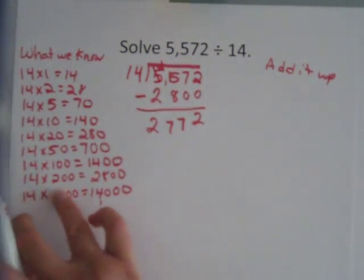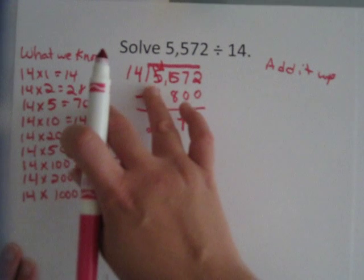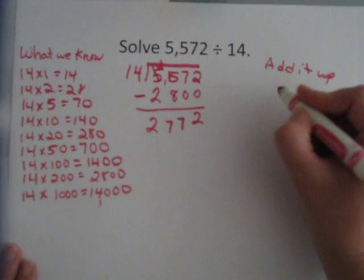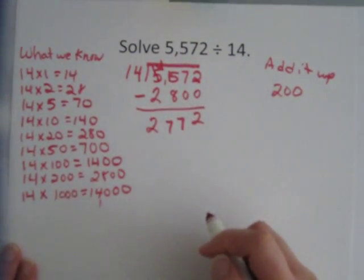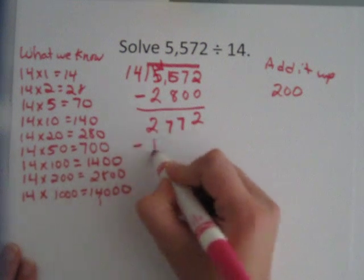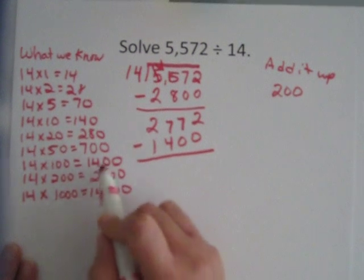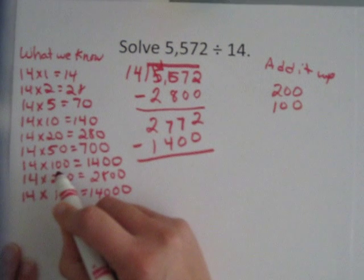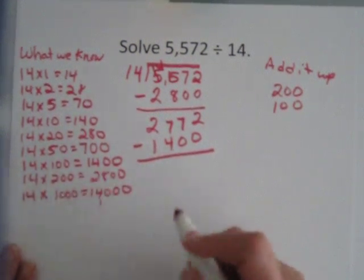Because that's what 14 goes into 5,572, 200 times to equal 2,800. Then I'm going to subtract out the next closest. This would be too much, so I'm going to use this one. So we put 100 under added up, because 100 times 14 is 1,400.